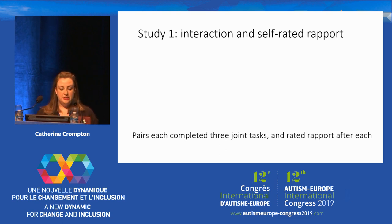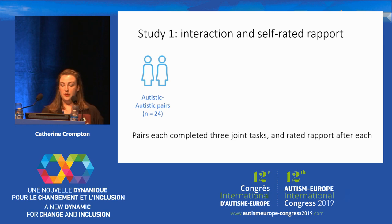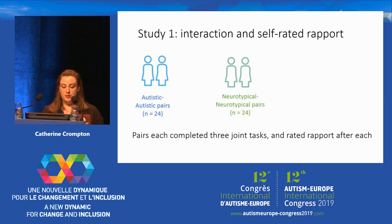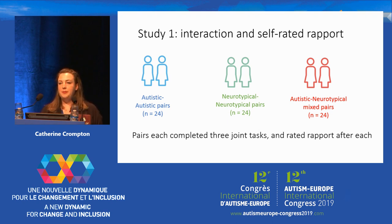We recruited 72 participants for Study 1. Half were autistic and half were neurotypical. We split them into three groups and then into pairs within these groups: autistic people paired with other autistic people, neurotypical people paired with other neurotypical people, and autistic and neurotypical people paired together. Nobody within these pairs knew each other before the study started. Participants were asked to complete three different collaborative social tasks with their partner, with a short break in between each task. Each task lasted around five minutes and involved things like building a tower out of spaghetti and plasticine and making a shape out of a twisting toy — so there was a lot of space for people to chat, get to know each other, and build rapport.